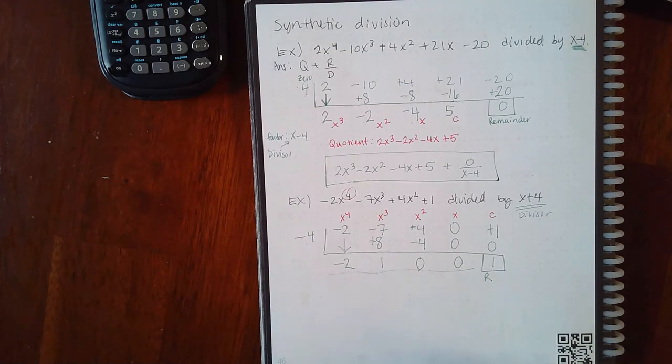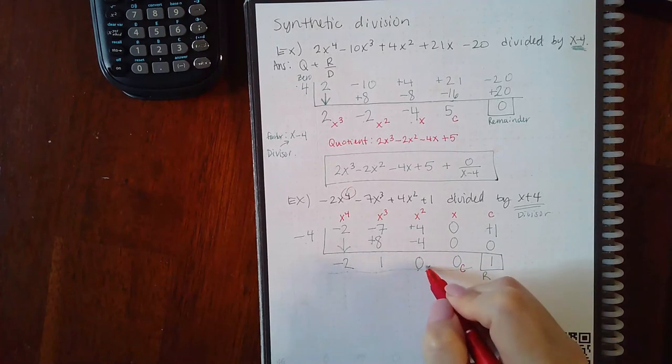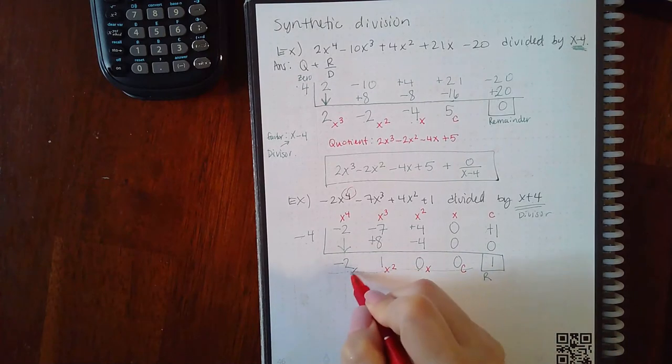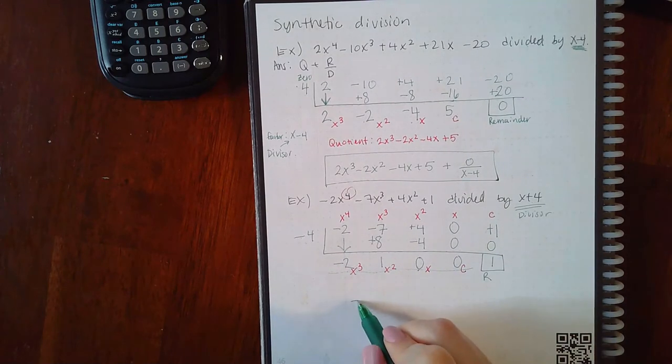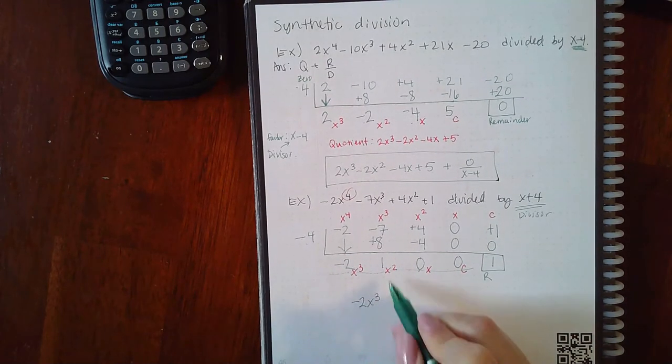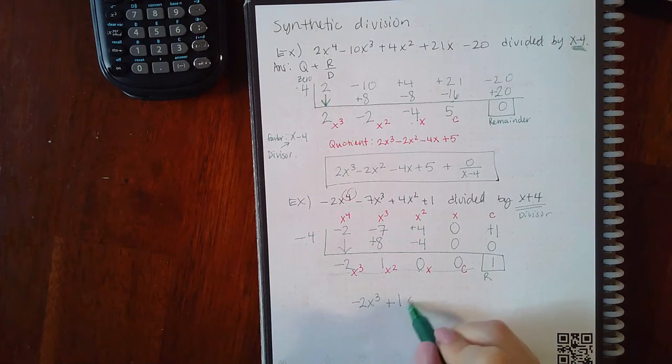This is going to give me my quotient. Remember, start off with the constant, then x, x squared, x cubed. There's my divisor. My final answer is going to be negative 2x cubed. This is a positive 1x squared, 0x, plus zero as a constant, plus my remainder over my divisor.